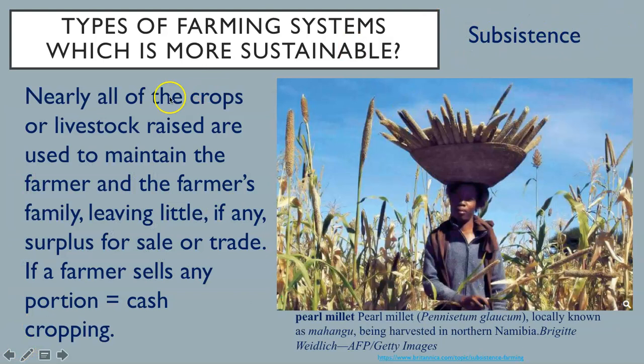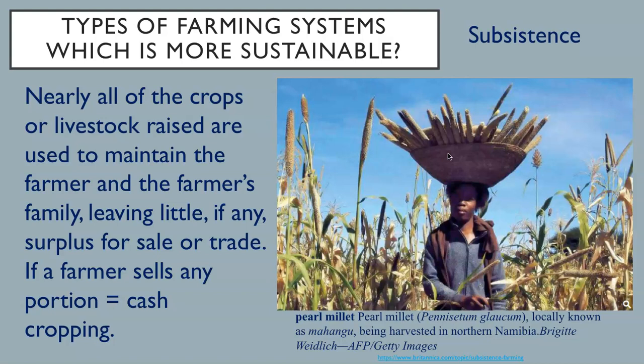In subsistence farming, nearly all of the crops or livestock are raised to maintain the farmer and the farmer's family, leaving little, if any, surplus for sale or trade. If a farmer is able to sell some of his product, this is called cash cropping. This is an image of subsistence farming of pearl millet in Namibia, Africa. Pearl millet is used as a whole grain, like rice cracked, or as a flour in pasta, fermented foods, porridges, couscous, beverages, and snacks.